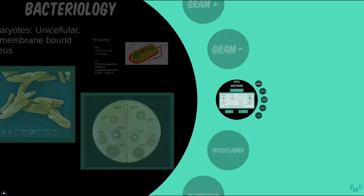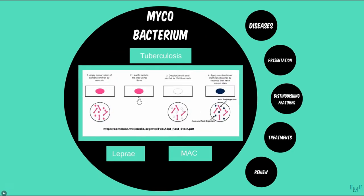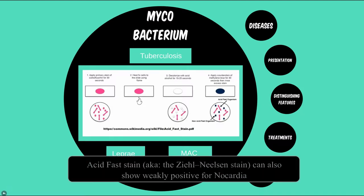As we start Module 8, we encounter our first non-gram staining bacteria. Well, that's not completely true. The Mycobacterium genus can stain weakly gram-negative, but sometimes a weak stain is not much better than no stain at all. In order to visualize this genus under the microscope, a special stain was needed to be implemented. The acid-fast stain was needed to overcome the bacteria's waxy and gram-stain-resisting cell membrane.